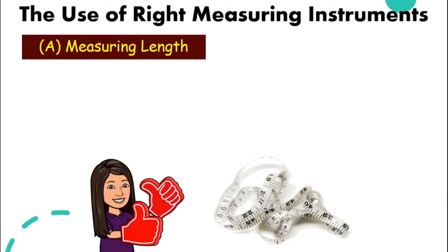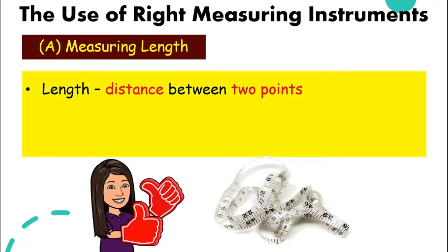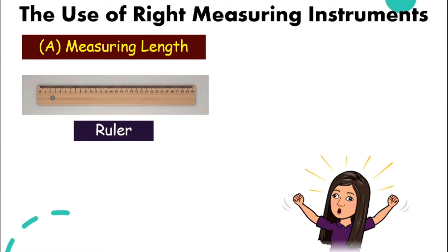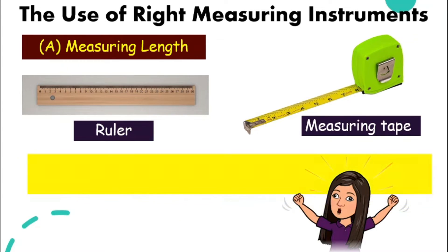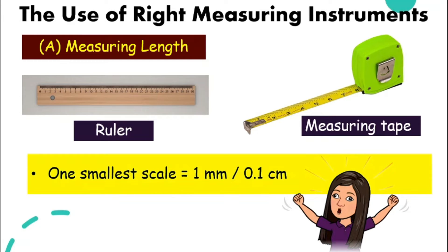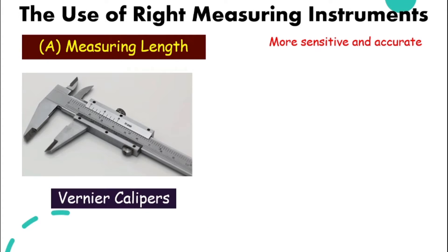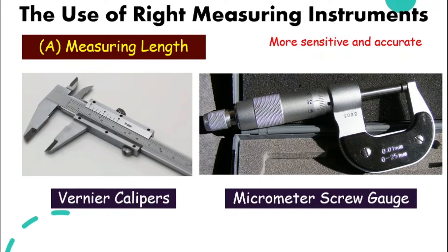Now let's look at measuring length. Length is the distance between two points. The SI unit is the meter, and we can also measure in millimeters, centimeters, or kilometers — prefixes we talked about in our previous video. Common instruments to measure length are a ruler and a measuring tape, and the smallest scale on these instruments is 1 mm or 0.1 cm. For higher accuracy, we can use vernier calipers or a micrometer screw gauge, which are more sensitive and hence more accurate.